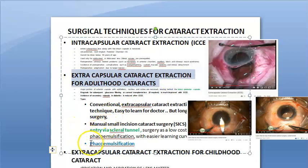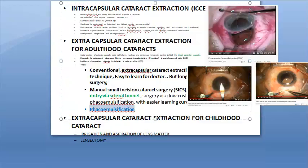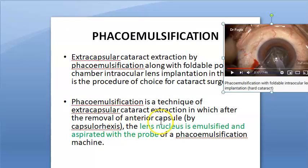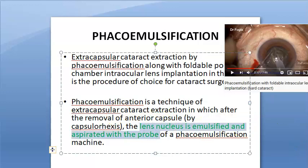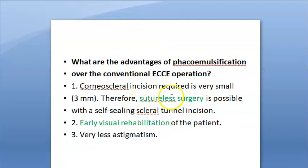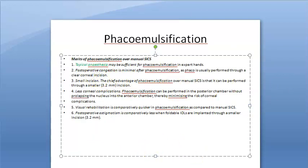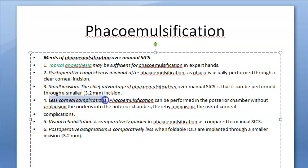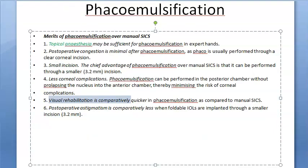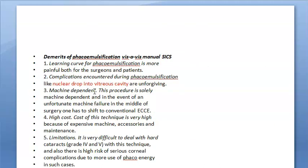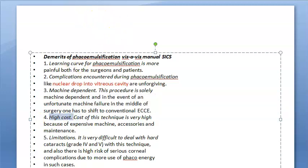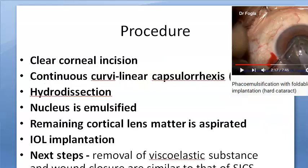Merits of phacoemulsification: topical anesthesia, minimal postoperative congestion, small incision, fewer corneal complications, quicker visual rehabilitation. Demerits: requires high surgical skill, expensive high-cost machinery, difficult with very hard cataracts, machine-dependent. Procedure: capsulorhexis, hydrodissection and hydrodelineation, nucleus emulsification by divide-and-conquer technique (four quadrants), cortex aspiration, implantation of foldable IOL.